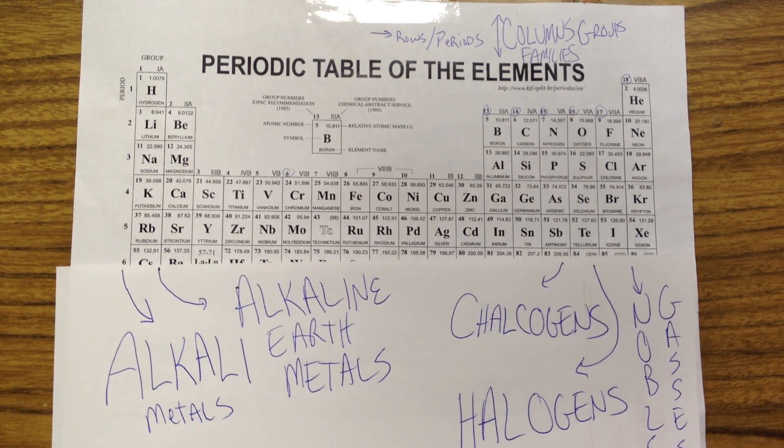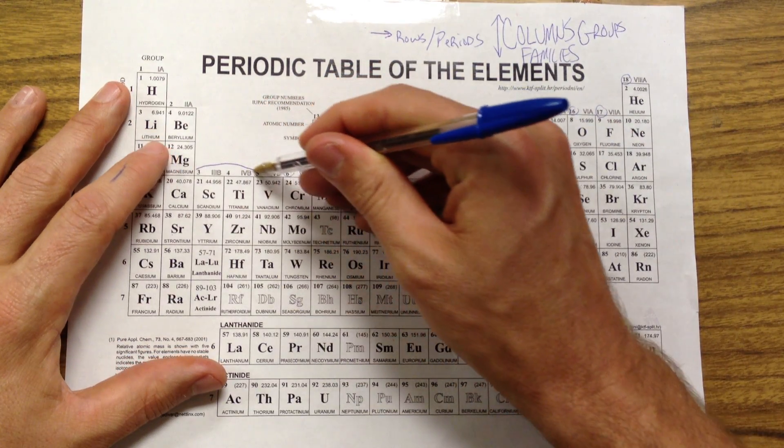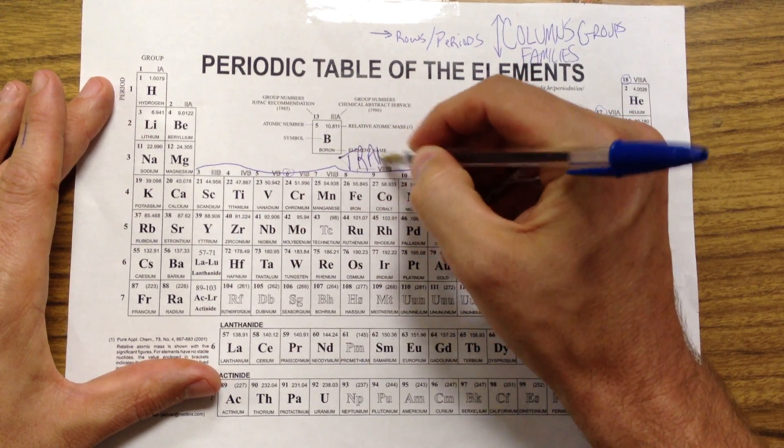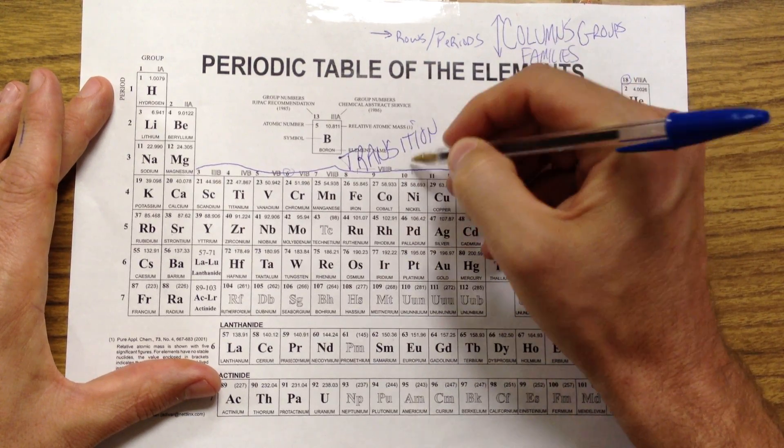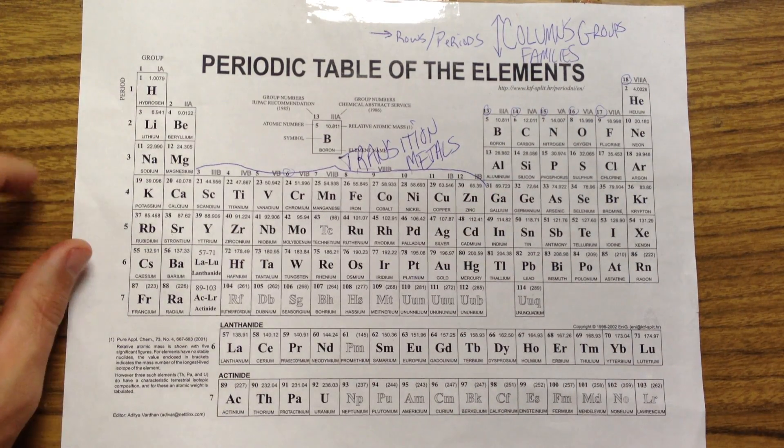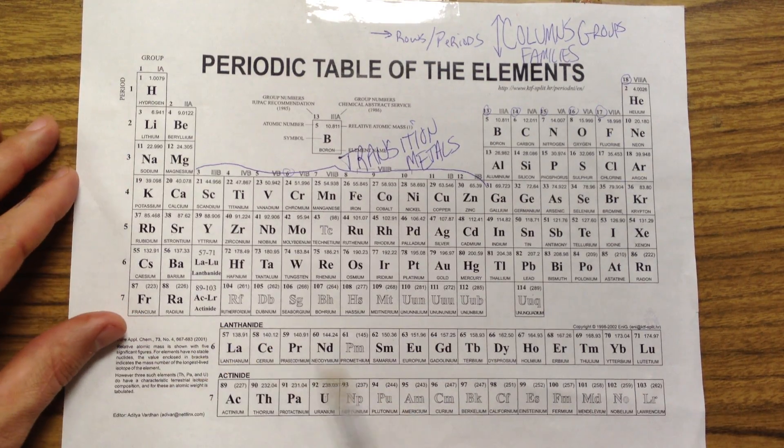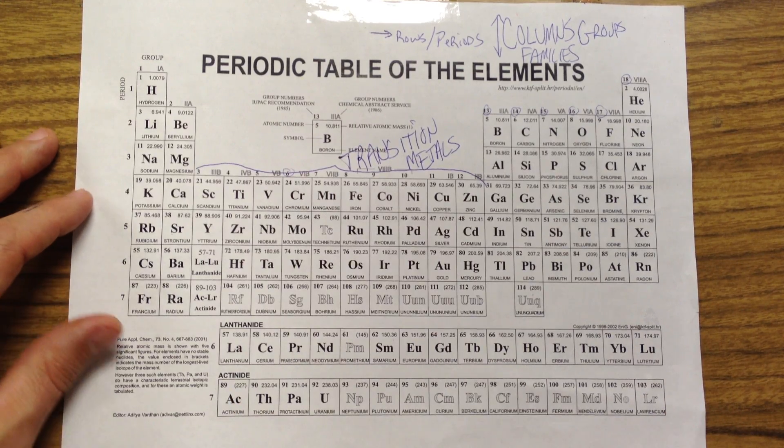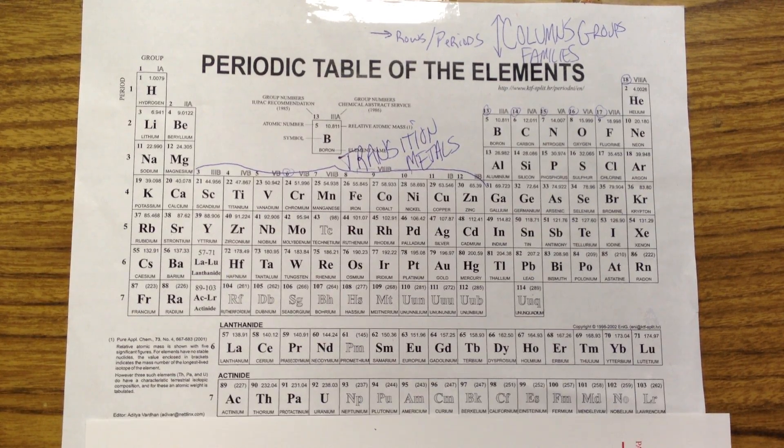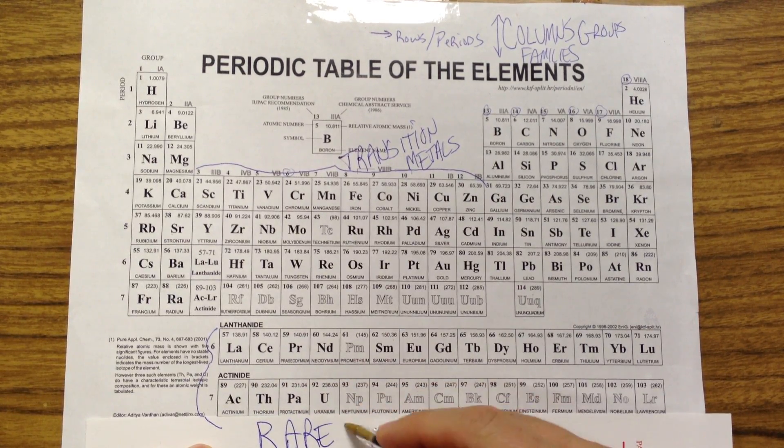So those are some of the common family names. Then there are a couple of other sections that you need to know about. Now, this big shorty section, the kind I kind of refer to as the shorties, those are called the Transition Elements. But since they're all metals, I call them the Transition Metals. And then, these groups down here, the Lanthanide Series and the Actinide Series, those collectively are all called the, both groups, both of those are known as the, together, the Rare Earth Metals.